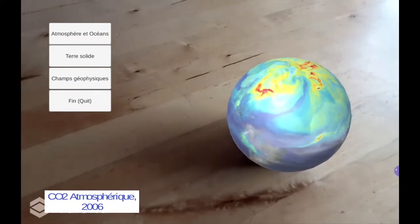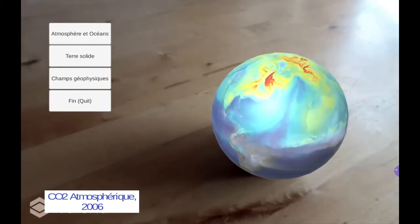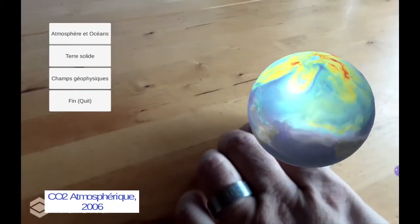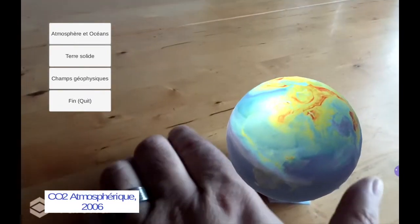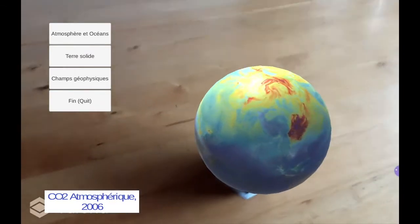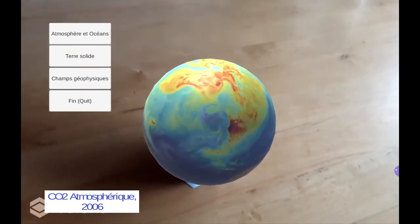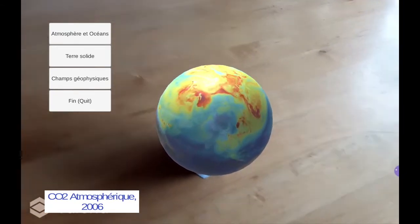The second one is one year of concentration of CO2 in the atmosphere. So here we are over North America. Here you see Brazil and South America. We can go towards Africa, Europe, Asia, and you can see the dynamics of CO2. Red is high concentrations. Yellow are low concentrations.